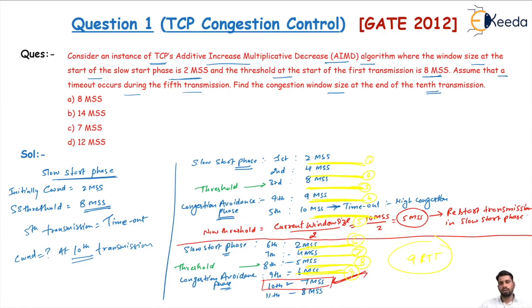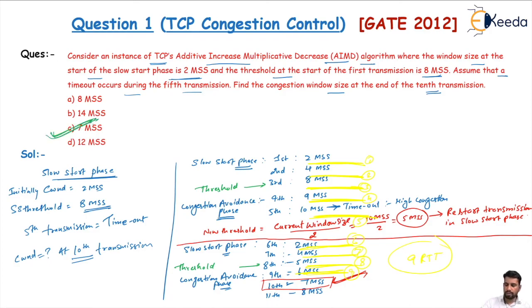They can ask you a question of any type this way. The correct answer is C — the answer is 7 MSS.